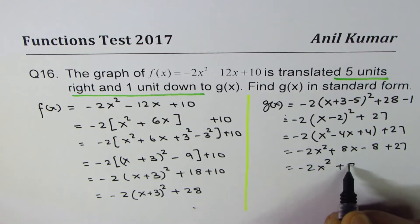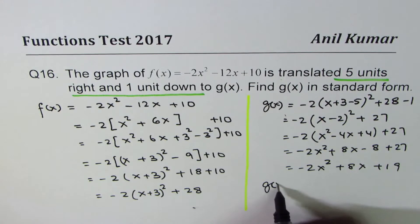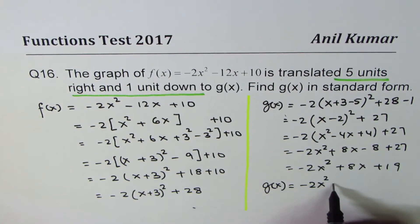This gives us -2x² + 8x + 19. So g(x) = -2x² + 8x + 19. That becomes the answer in standard form.